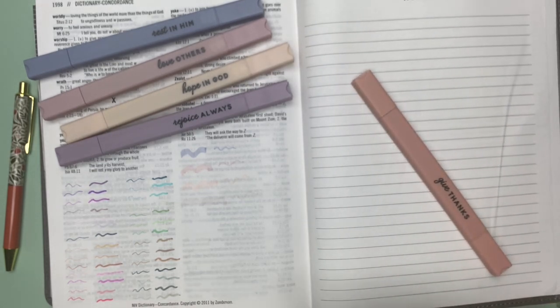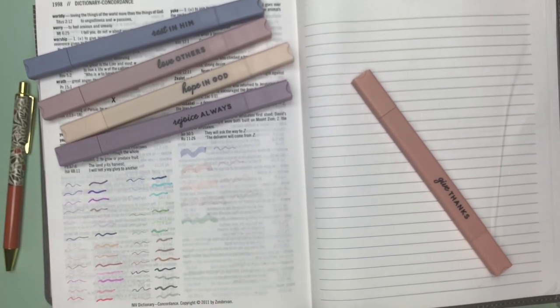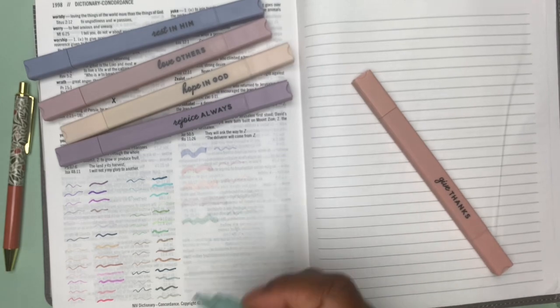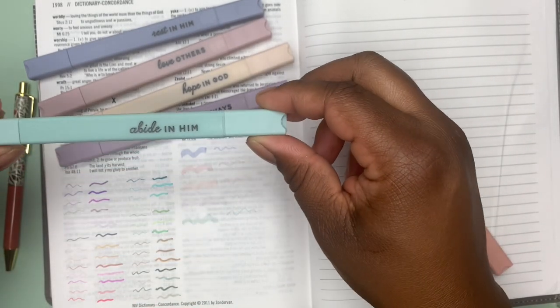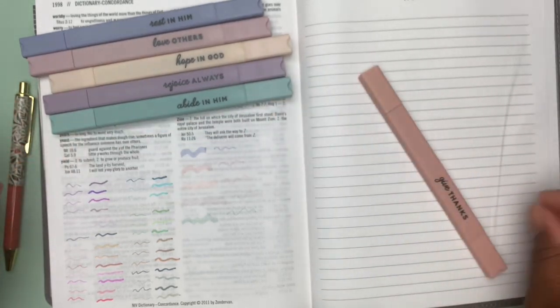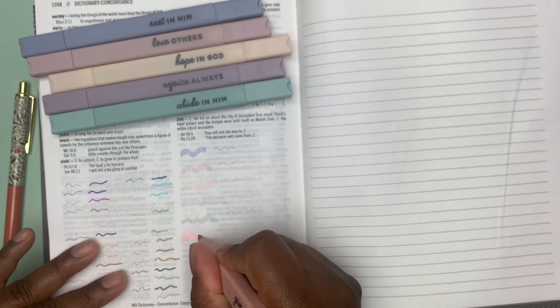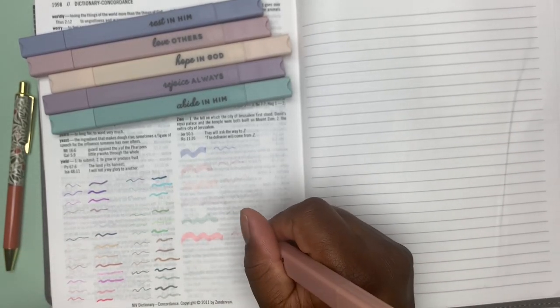Try to keep it in order. Oh, that's pretty. Well, all these colors are pretty. All right. So like I said, that one's rejoice always. This one is abide in him. Give thanks. Ooh, that's a boldness right there.